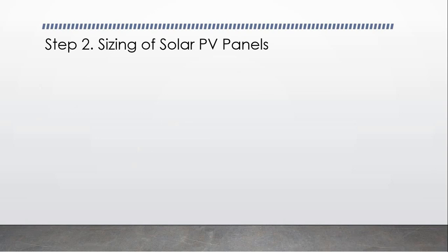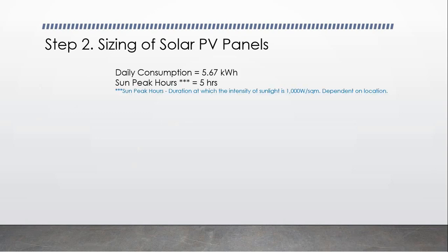Step two is the sizing of the solar PV panels. Now that we have calculated our daily power consumption, we also need to determine how much sun your location gets, or what we call sun peak hours. The sun peak hours is the duration at which the intensity of sunlight is 1,000 watts per square meter. The average is usually around four to five hours, and that value varies as you move away from the equator. There are locations with longer days and some with longer nights, so you need to look this up. You can use four or five hours if you just want to approximate.